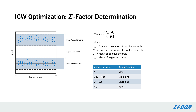One final optimization step of the in-cell western assay that I'd like to discuss is the Z-factor determination. The Z-factor is a statistical parameter that can be used to assess the quality and reliability of an assay. In a Z-factor experiment, data from positive control, negative control, and background wells are compared. Signal is shown on the y-axis, and sample or replicate number is shown on the x-axis. The top dataset represents the positive control and the bottom dataset represents the negative control. The Z-factor calculation takes into account both the means and the standard deviation for both datasets, resulting in a value that reflects the separation between the two datasets. Z-factor measurements typically have a score between 0 and 1: 1 is ideal, 0.5 to 1.0 is excellent, 0 to 0.5 is marginal and should be further optimized, and less than or equal to 0 is poor.